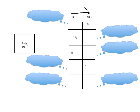So this box here is pretty easy. I have a 6. I'm going forward, so I know I'm going to be adding 9. In my thinking bubble, I could be thinking that's 6 plus 9. Now I know that 6 plus 9 equals 15, so I know that my out box is going to be 15.